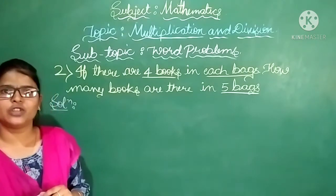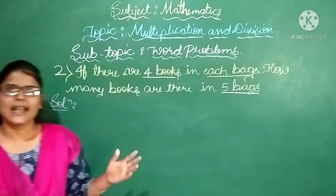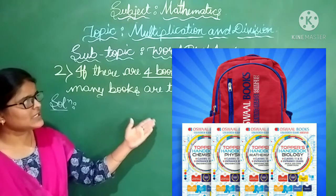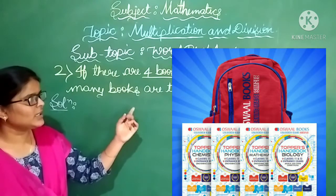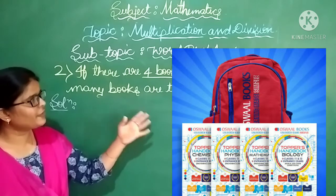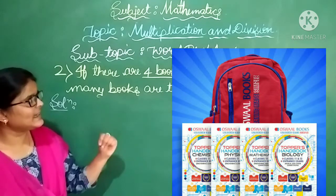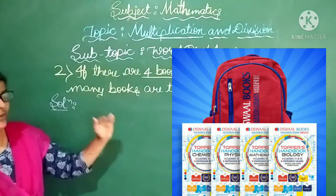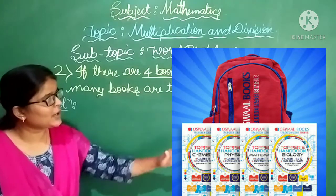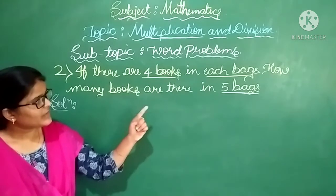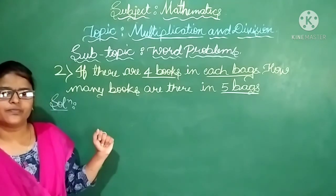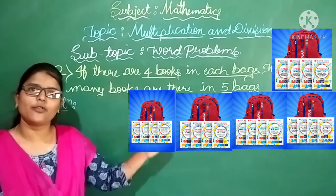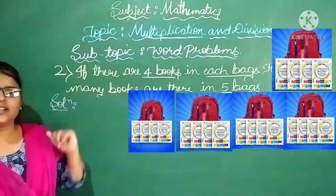How to solve this? Can you see the bag on the board? In this bag, count the books: 1, 2, 3, 4. Here there is 1 bag with 4 books. Our question is to find the number of books in 5 bags.